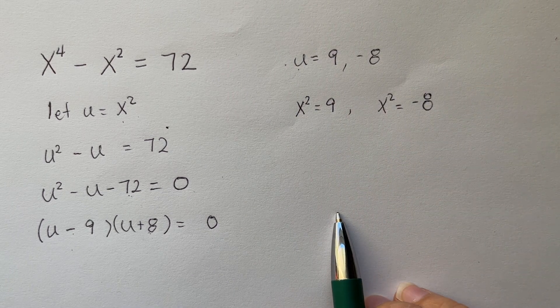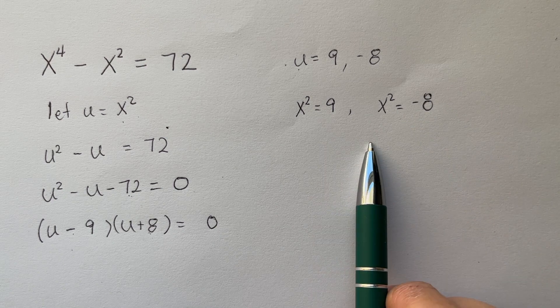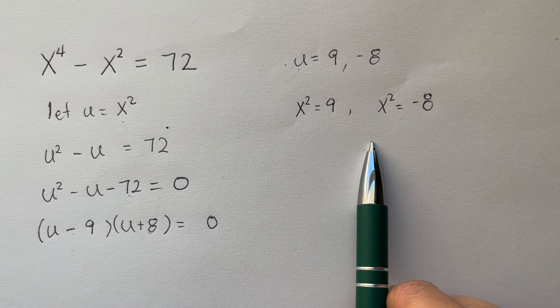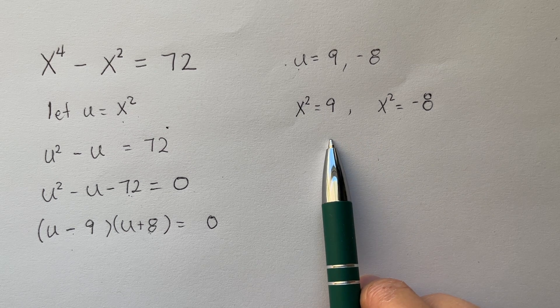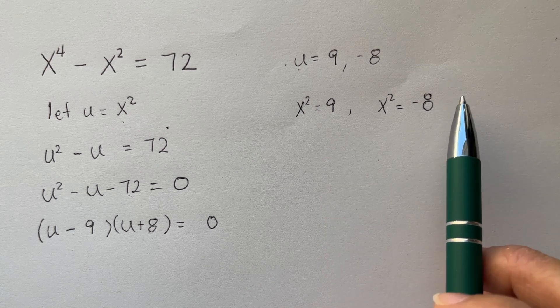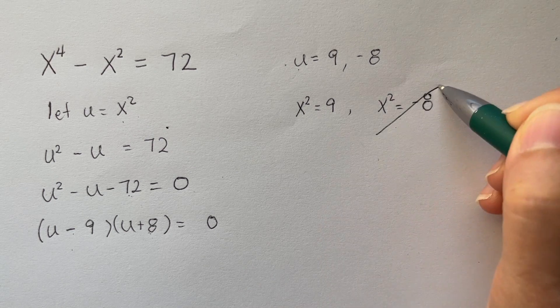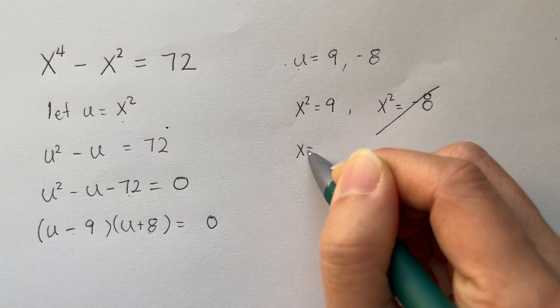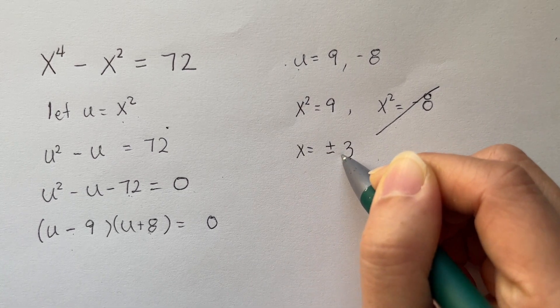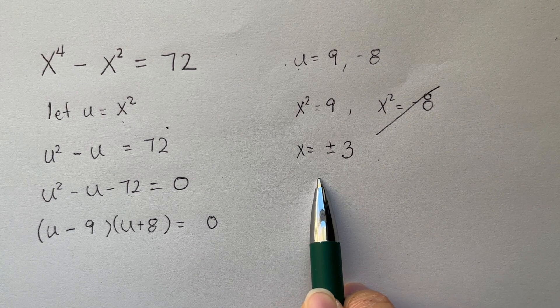Now, right off the bat, we can eliminate one of these answers. Two negative numbers multiplied together is positive. Two positive numbers together is positive. So this won't work. Now we have x is equal to plus or minus 3. And that is your answer.